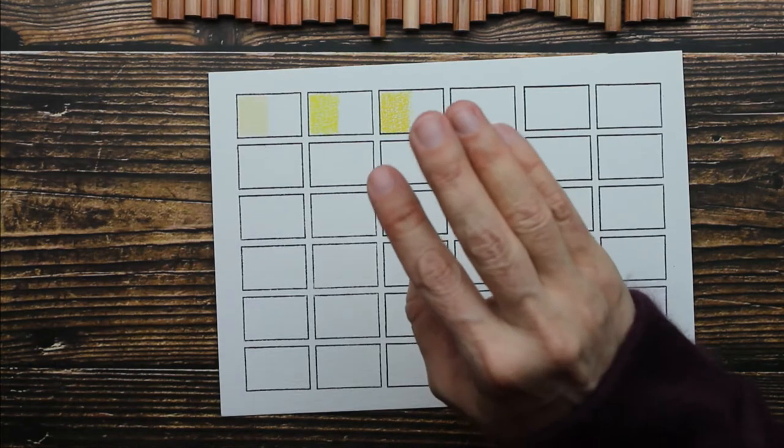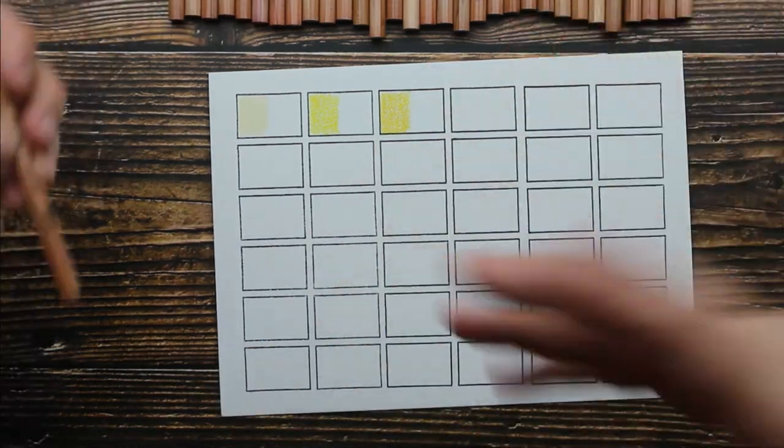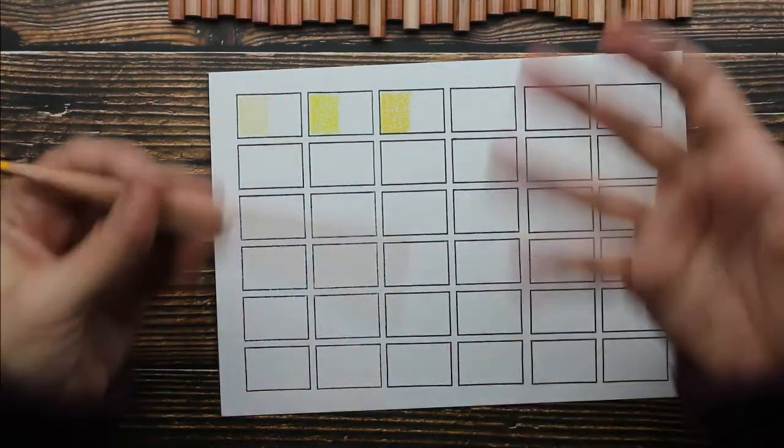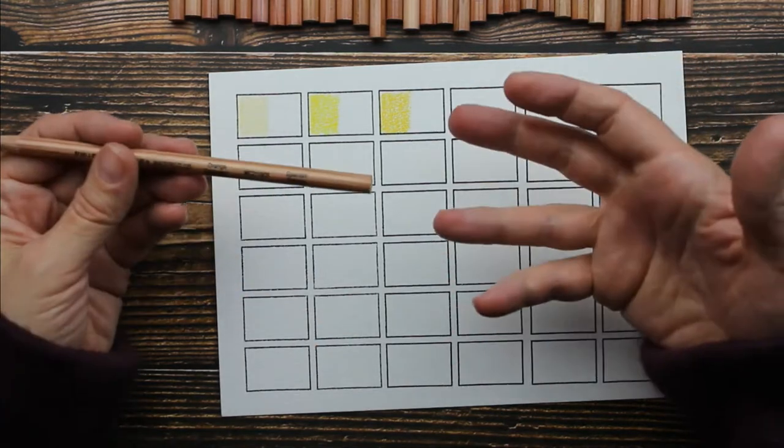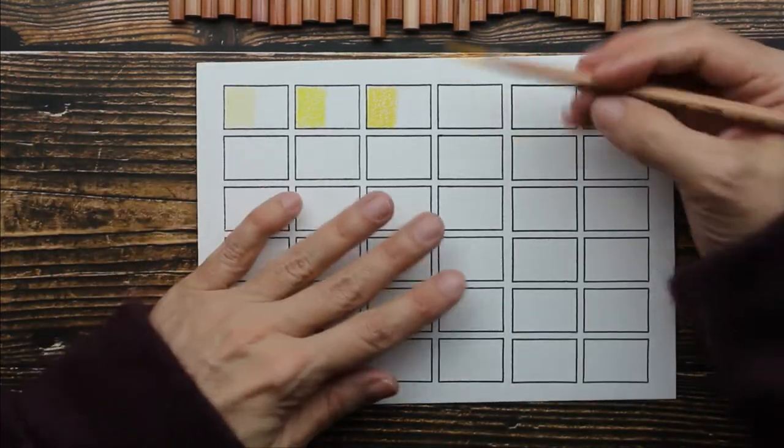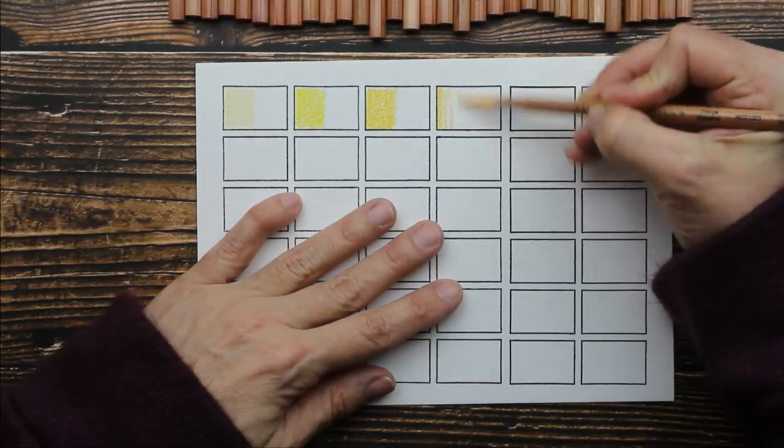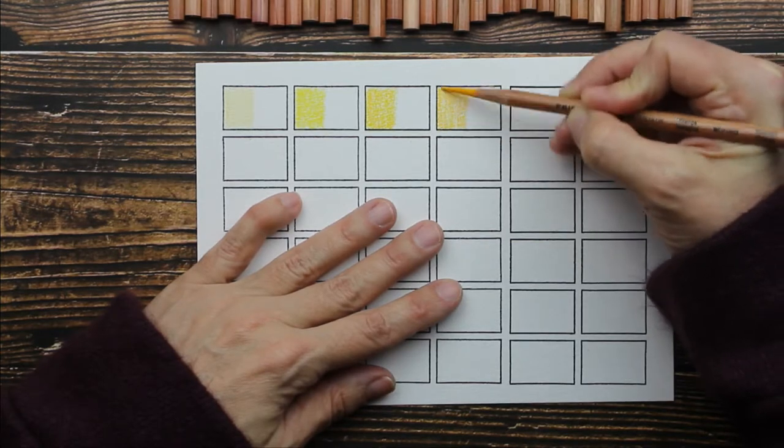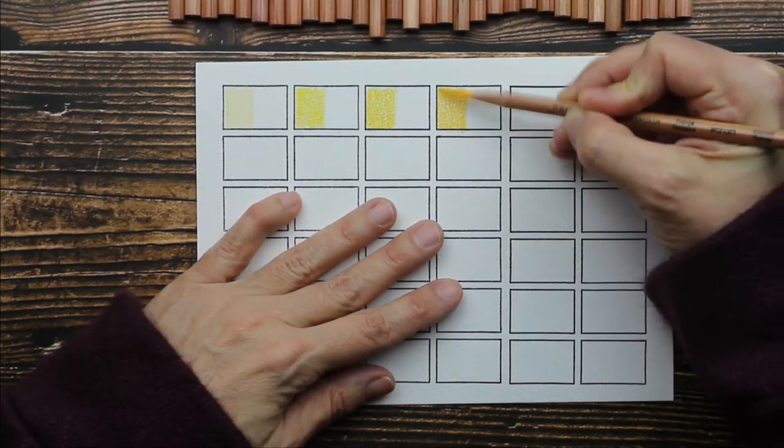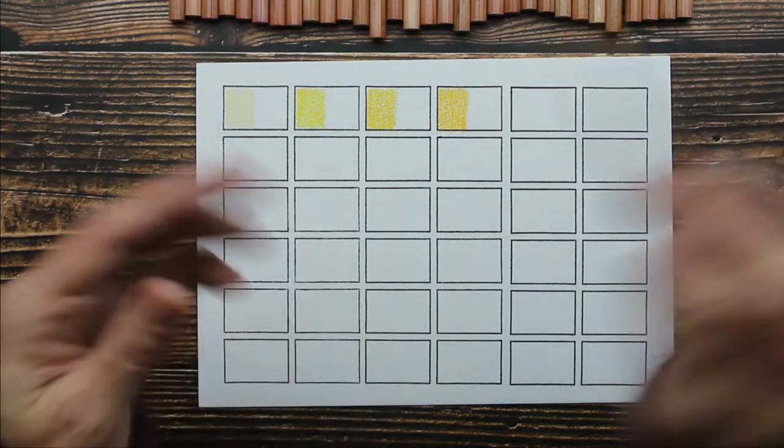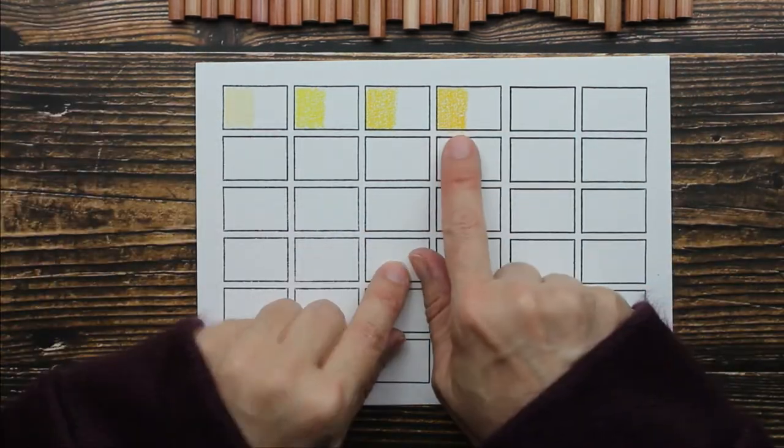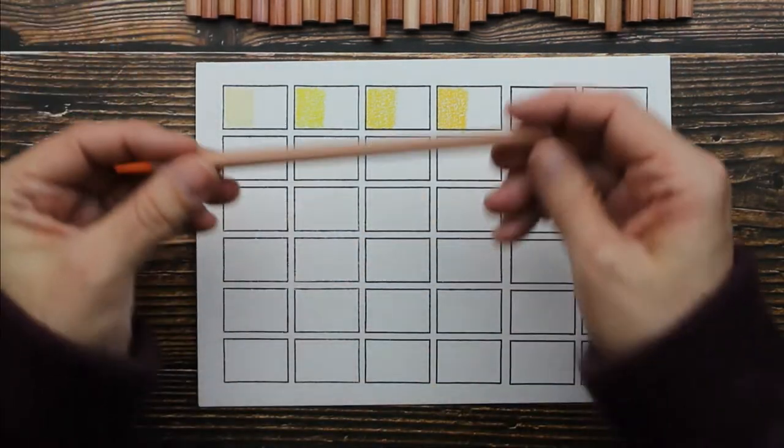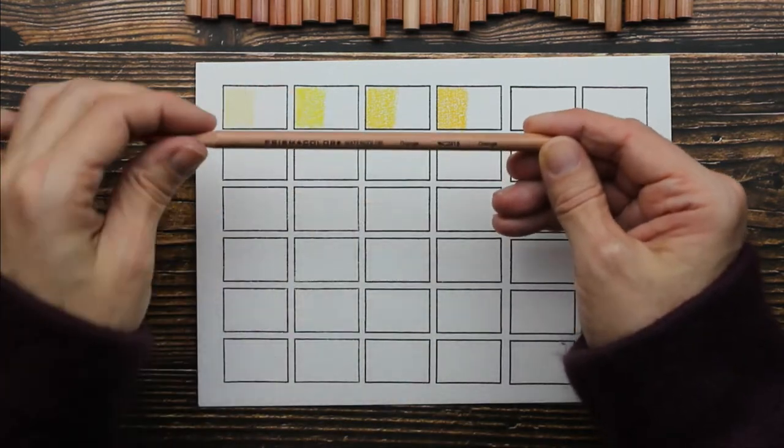If you're looking for a color pencil that'll do more than one thing, this one you really can use dry and it works really well. And then when you're ready to or if you want to activate it in water, you can do that too. That's a really good yellow, a really good mustard yellow. This is called Orange.